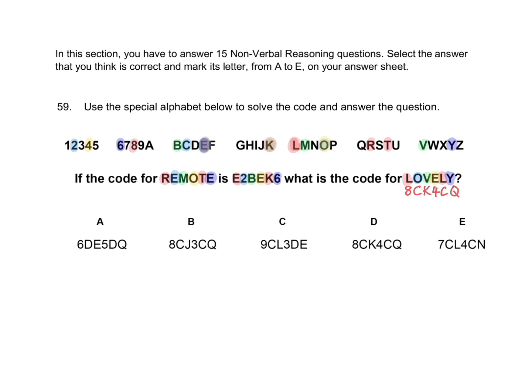The full code then for LOVELY is 8, C, K, 4, C, Q. Meaning D was the correct answer to this question. And you can show that answer of D on the answer paper like this.